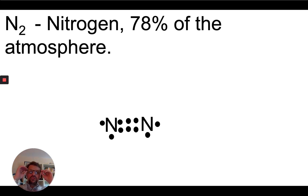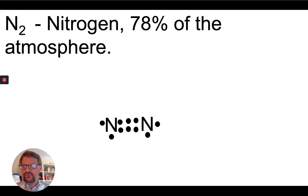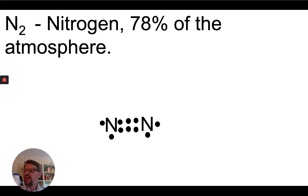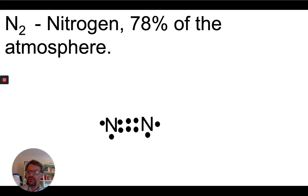So those are Lewis dot structures — the idea is to show how electrons hold together the atoms of a molecule. In the next lesson, you'll look at how we can use these to determine the shape of a molecule. All right, everybody — do your best, and I'll see you later. Take care.